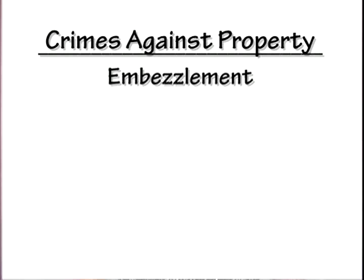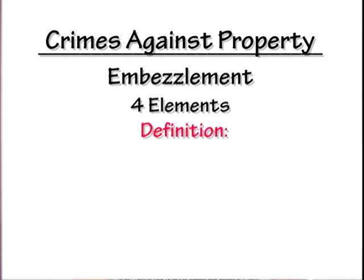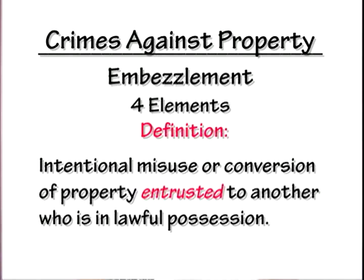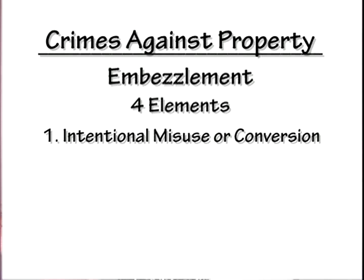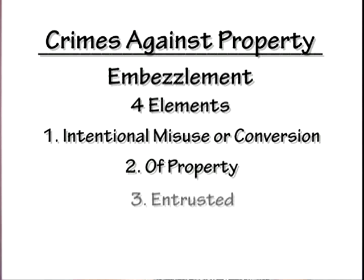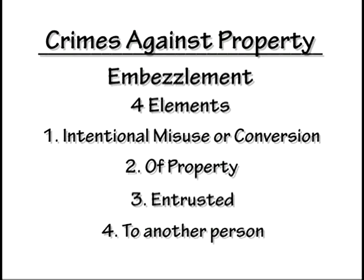Number six is embezzlement. There are four elements. The definition of embezzlement is the intentional misuse or conversion of property entrusted to another who is in lawful possession. The four elements are: number one, intentional misuse or conversion; number two, of property; number three, entrusted; and number four, to another person.